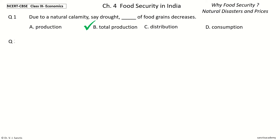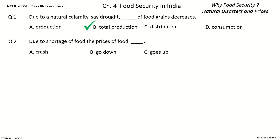Question 2: Due to shortage of food, the prices of food dash. The options are: crash, go down, goes up, remain steady. And the answer is goes up. So, due to shortage of food, the prices of food goes up.